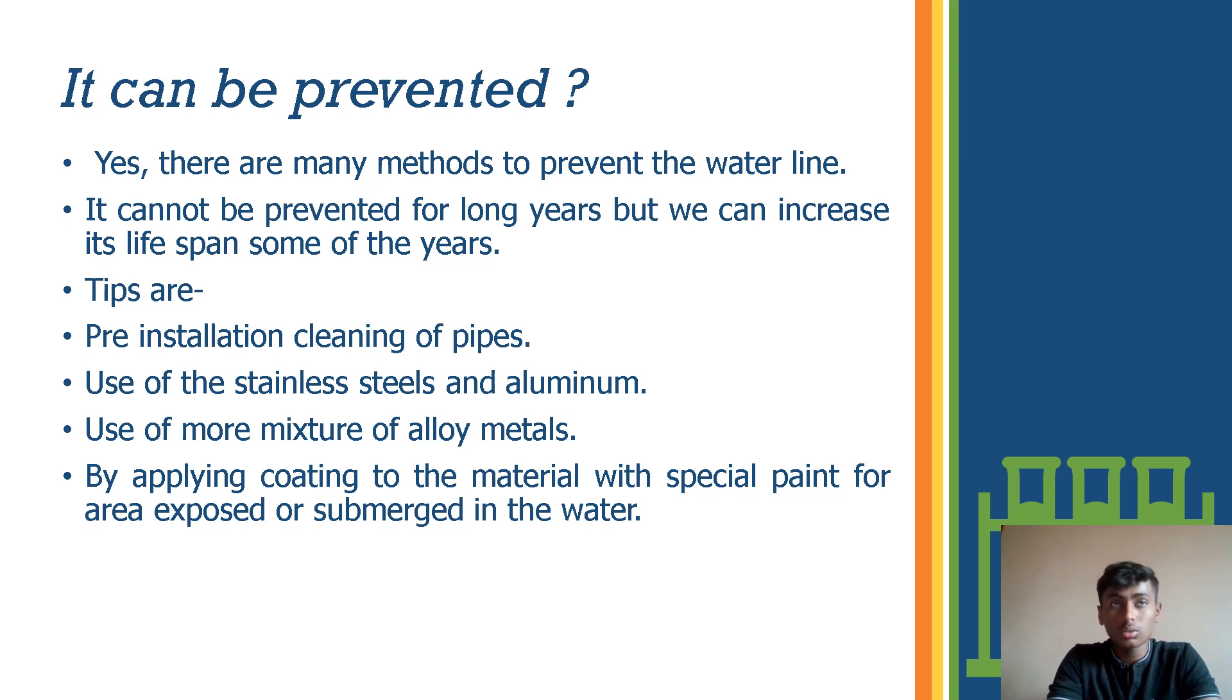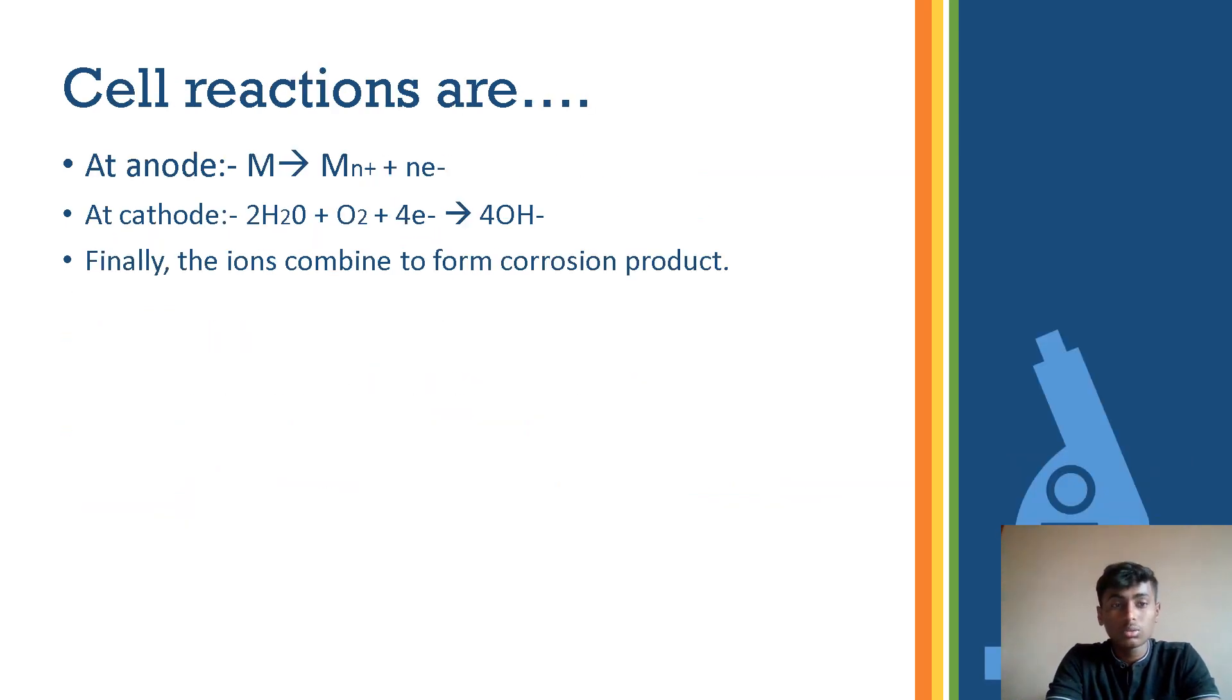Then see the cell reactions. Cell reactions at the anode part: the metal undergoes oxidation and it gives an electron. At the cathode part, the water undergoes to form a hydroxyl ion. Finally, ions combine to form a corrosion product. This is the cell reactions.